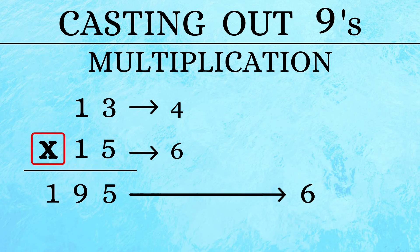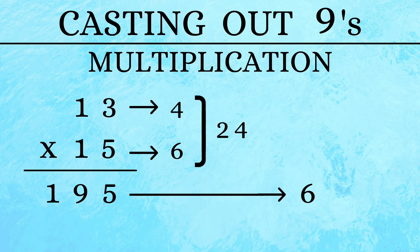Since we are verifying multiplication, we will have to multiply these two numbers. 4 times 6 is 24. Now we add up the digits 2 and 4 again to get a 6.